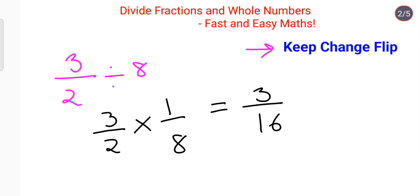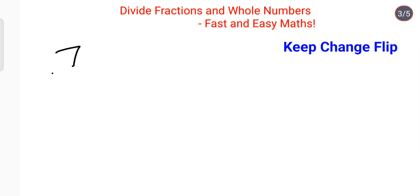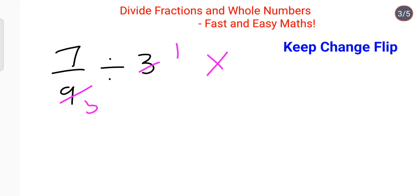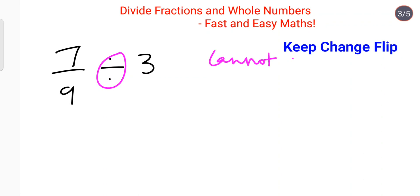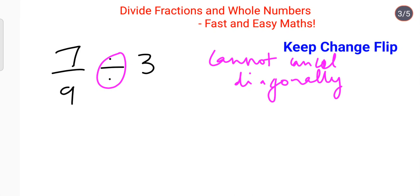Now let's do an example where many students get stuck: 7 upon 9 divided by 3. A lot of students mistakenly try to cancel diagonally — but that is absolutely wrong. When you have a division sign, you cannot cancel diagonally between any two numbers.